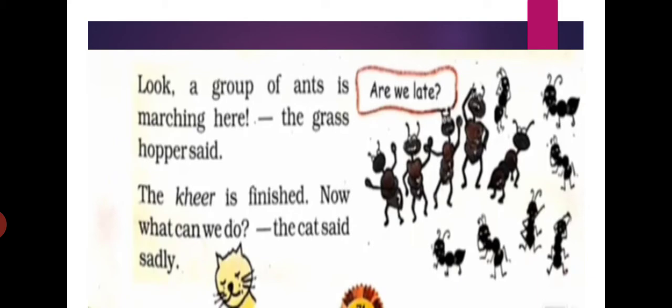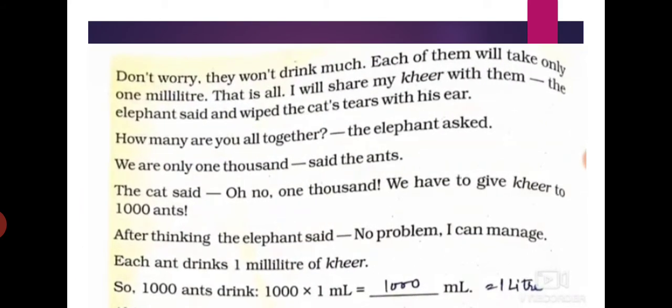A group of ants is marching here, said the grasshopper. But the Kheer is finished — what can we do? said the cat sadly. Thousands of ants are marching here. But the Kheer is finished, so the cat said sadly: now what can we do? Don't worry — they won't drink much. Each of them will take only 1 ml. I will share my Kheer with them, said the elephant, wiping the cat's tear with his ear.